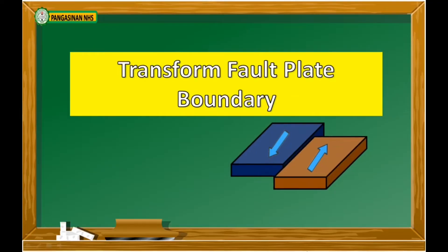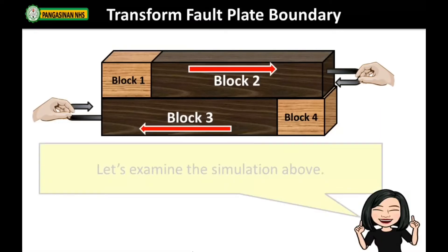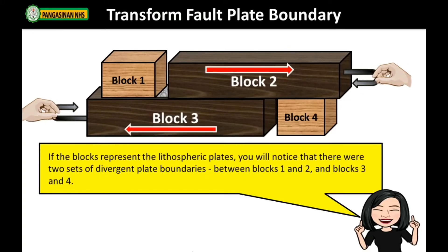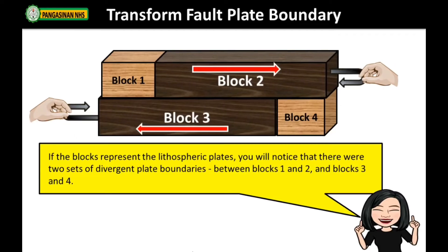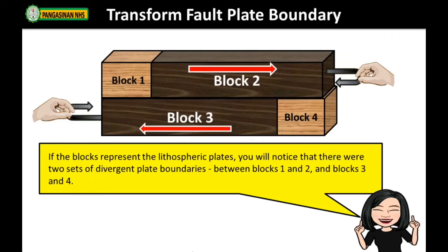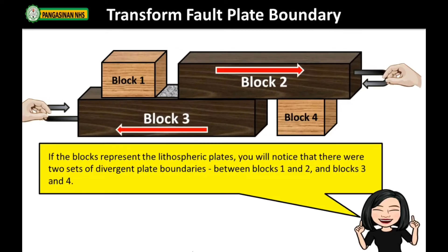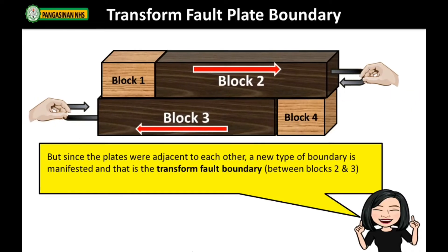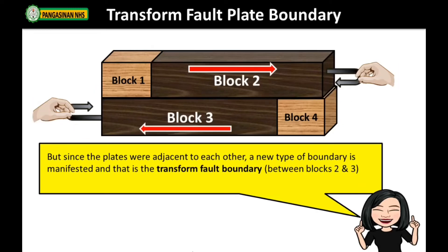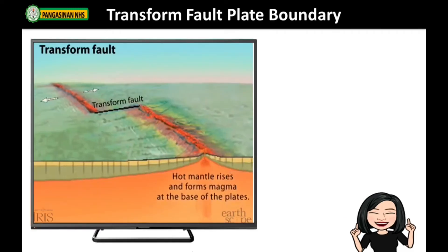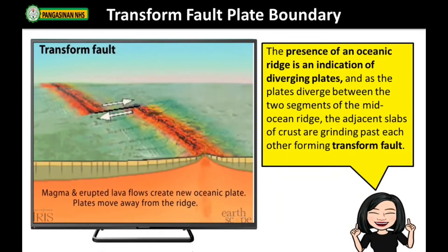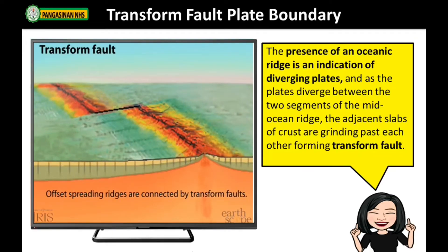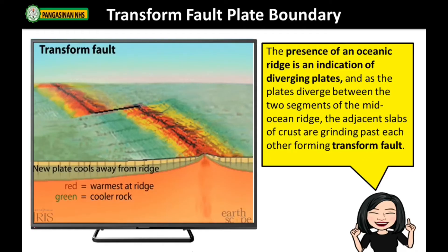Transform fault plate boundary. Looking at the simulation, if the blocks represent the lithospheric plates, you will notice two sets of divergent plate boundaries — between blocks 1 and 2, and blocks 3 and 4. But since the plates were adjacent to each other, a new type of boundary is manifested: the transform fault boundary between blocks 2 and 3. The presence of an oceanic ridge indicates diverging plates, and as plates diverge between two segments of the mid-ocean ridge, the adjacent slabs of crust grind past each other, forming a transform fault.